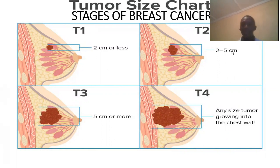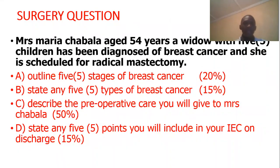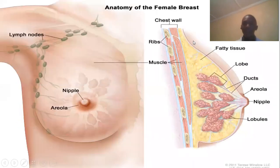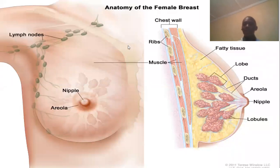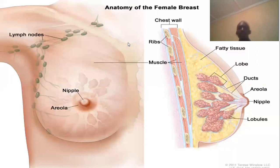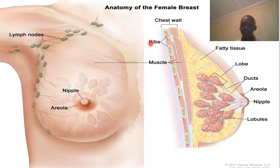Moving on to question B: state any five types of breast cancer removal. Before answering, when reading about breast cancer make sure you understand the anatomy of the breast. During an exam you need to draw the breast diagram that is visible to the examiner, including a heading because it carries marks.